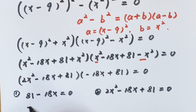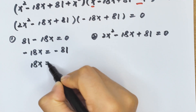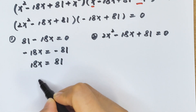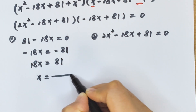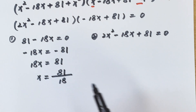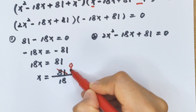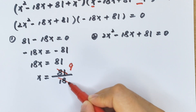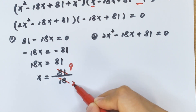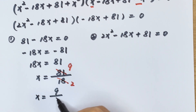In the first case, x squared minus 18x plus 81 equals 0, which means 18x equals 81. So x equals 81 divided by 18, and simplifying by dividing both by 9, x equals 9 over 2.